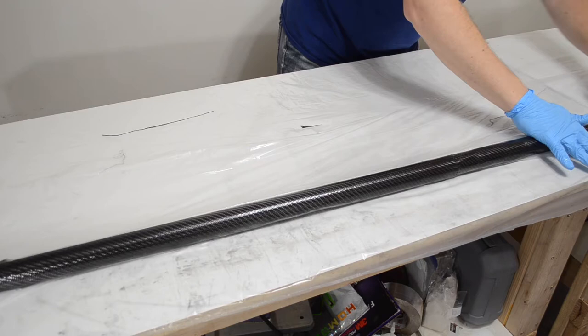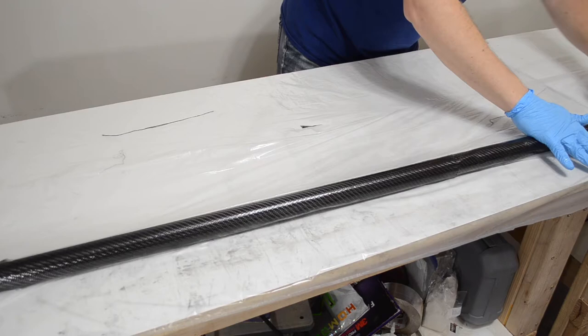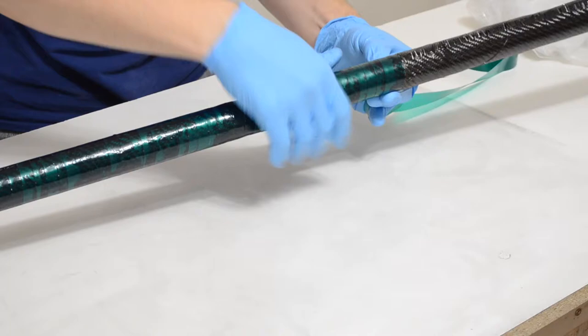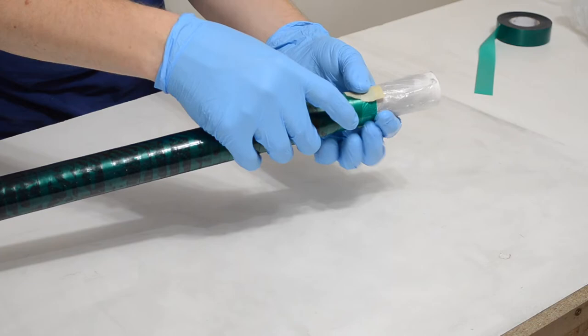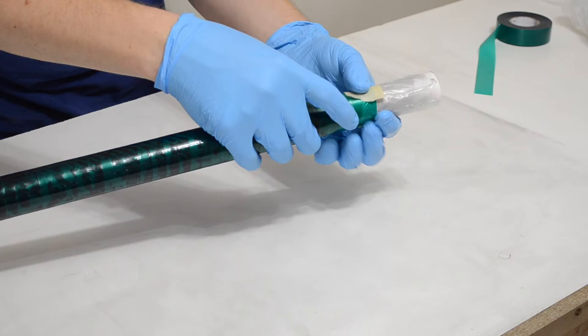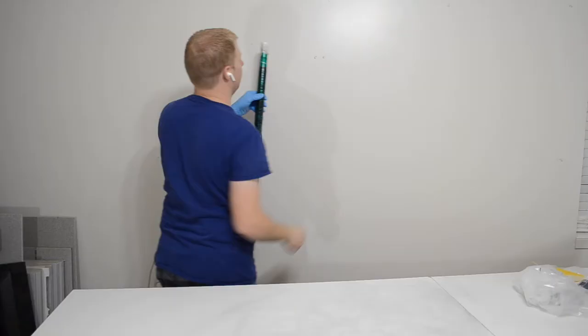But other than that massive hiccup, things went pretty well. With it rolled all the way onto the mandrel, I was able to wrap it with this green stuff I got at Home Depot. I could use actual heat shrink tape or something like that, but this was cheap and available. I'll throw a link in the description. It actually worked really well. It's self-releasing from epoxy, and it's a little bit stretchy, which allows me to pull it pretty tight as I wind it.